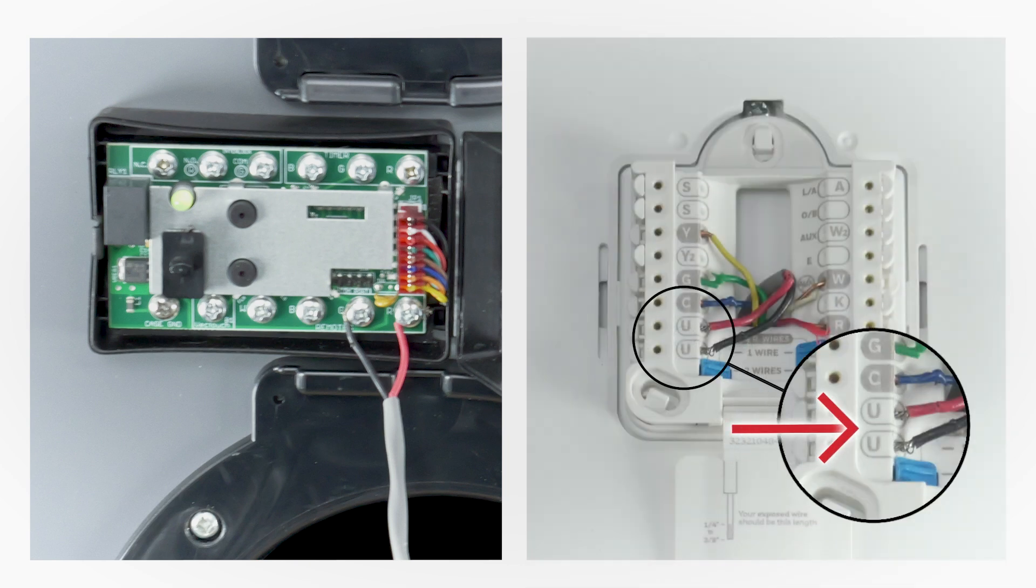Next, wire the U terminals on the T10 Plus directly to the connections labeled R and G found on the remote section on the ventilator control board.